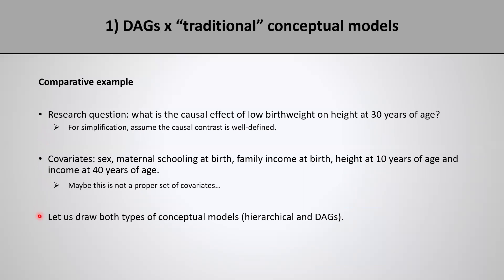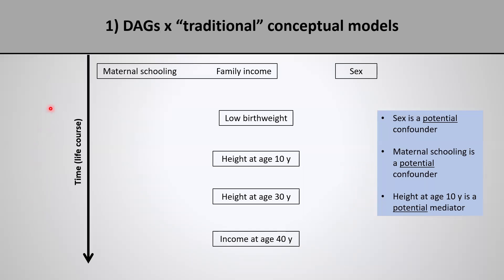Here we have a hierarchical conceptual model involving all the variables from the previous slide. Notice they are organized according to life course, because none of them can violate temporality. At the top we have maternal schooling and family income at birth, alongside sex. Then we have low birth weight, which is our exposure, then height at age 10, height at age 30, which is our outcome, and income at age 40. Maternal schooling and family income are placed in the same box to represent that those two variables pertain to the same socioeconomic position domain.